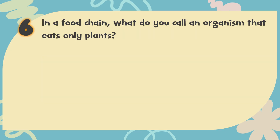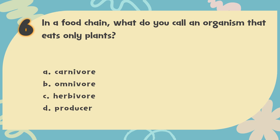Number 6: In a food chain, what do you call an organism that eats only plants? The choices are: A. Carnivore, B. Omnivore, C. Herbivore, D. Producer.